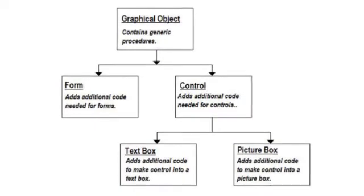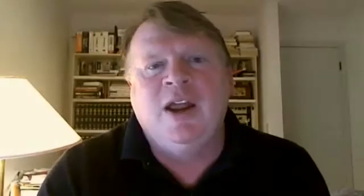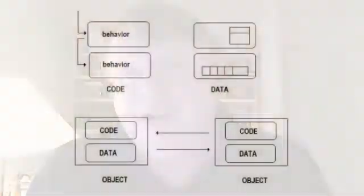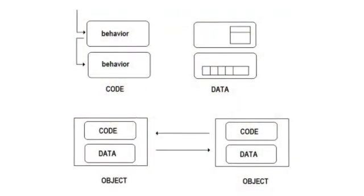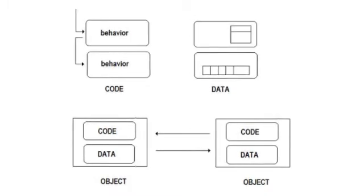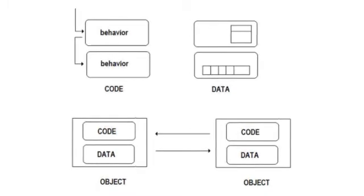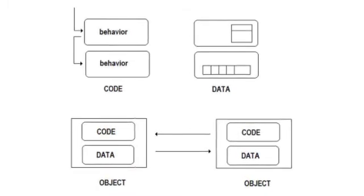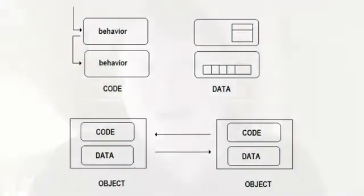Simply, it's organizing the code and the data together. Some of you will know exactly what code and data are — code is the behavior of the program, and data is the information. So object-oriented programming is simply a way of combining data with the behavior that affects that particular kind of data.